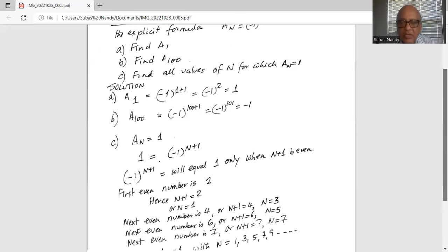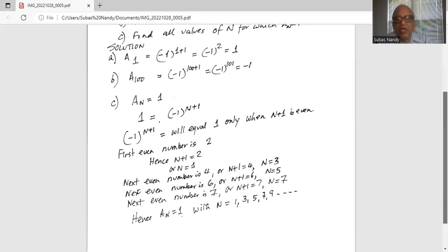So n equals 1, 3, 5, 7, 9. Next one will be 11 and so forth. All the odd numbers.